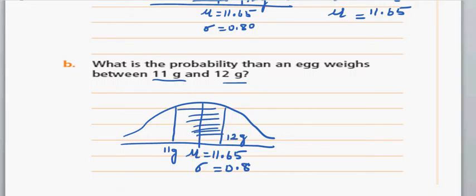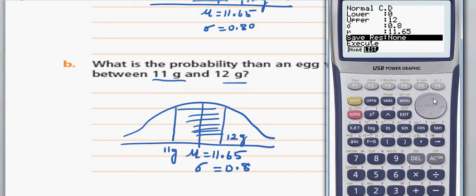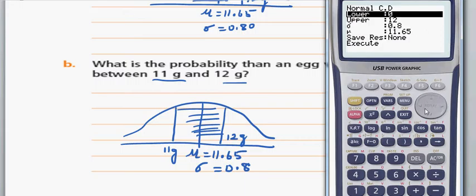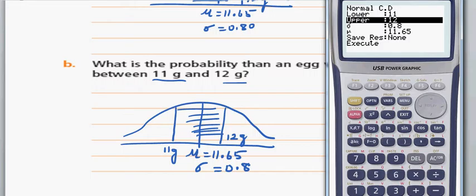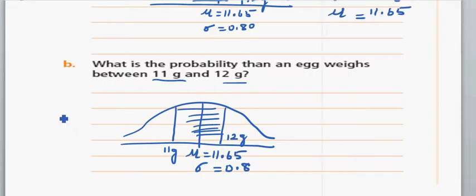So the lower is 11, the upper is 12, and the rest of the settings remain the same. The answer is 0.4609. Round it to 4 decimal places — always be careful with rounding.